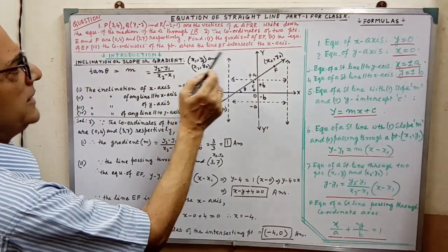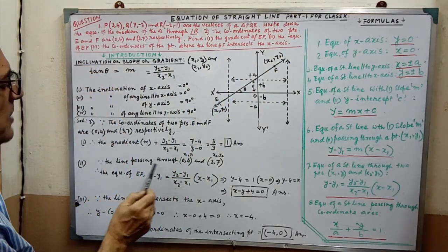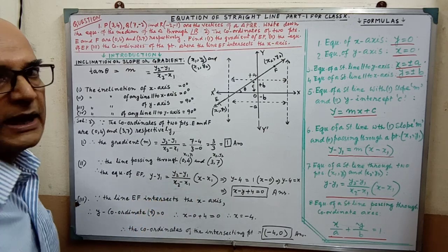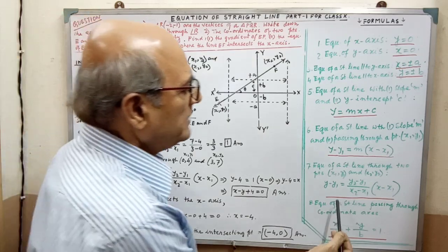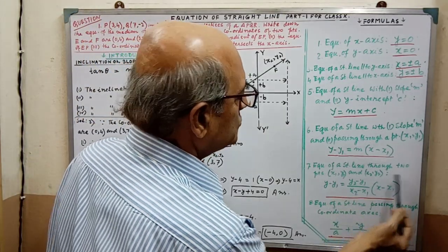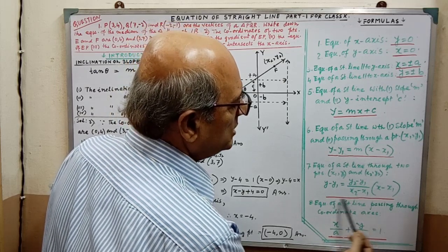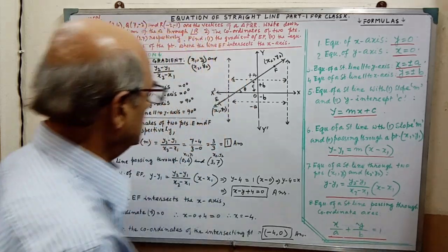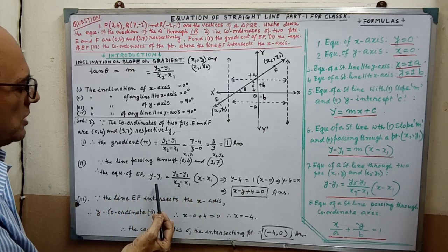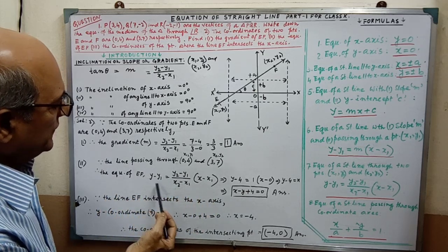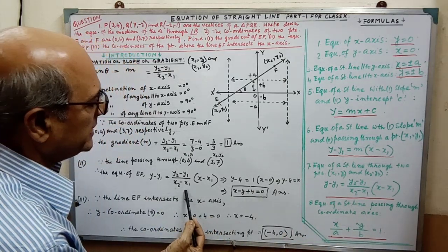Second part: the equation of EF. Since the line passes through (0, 4) and (3, -7) — coordinates of two points are given and the line passes through two points — naturally you apply the two-point form of the equation.